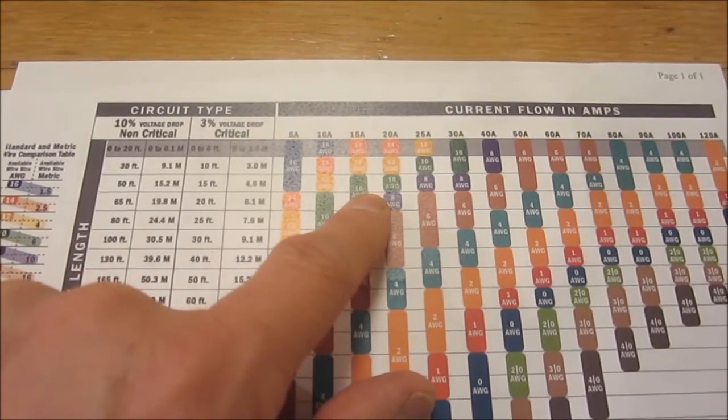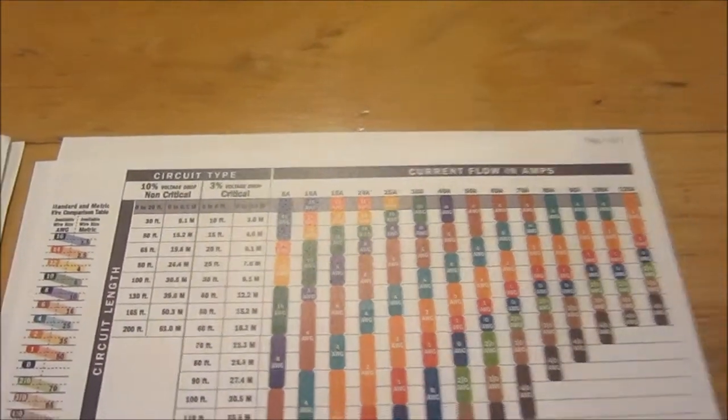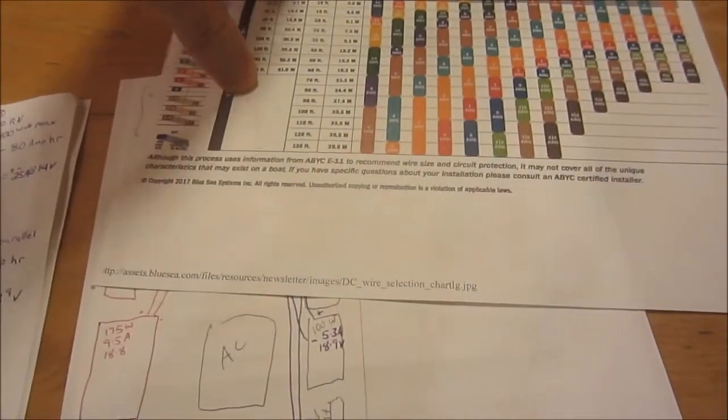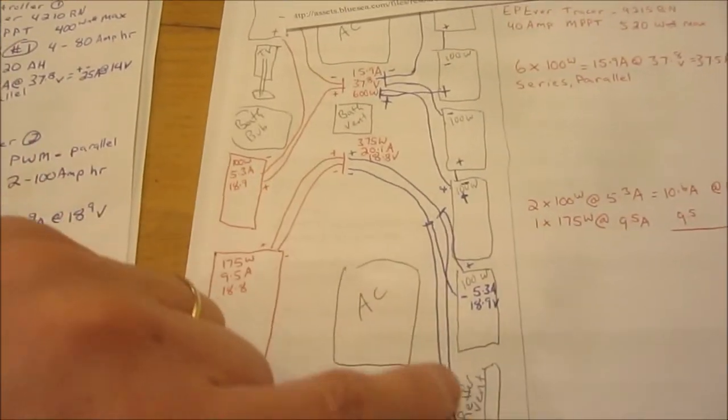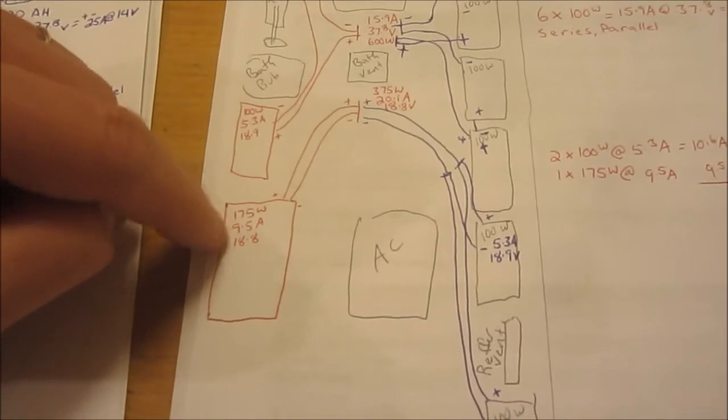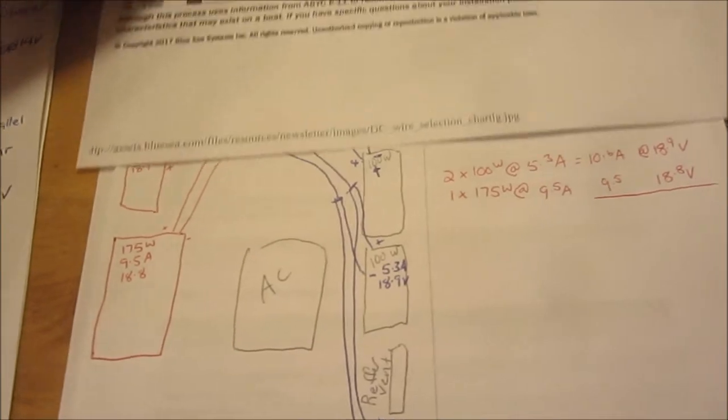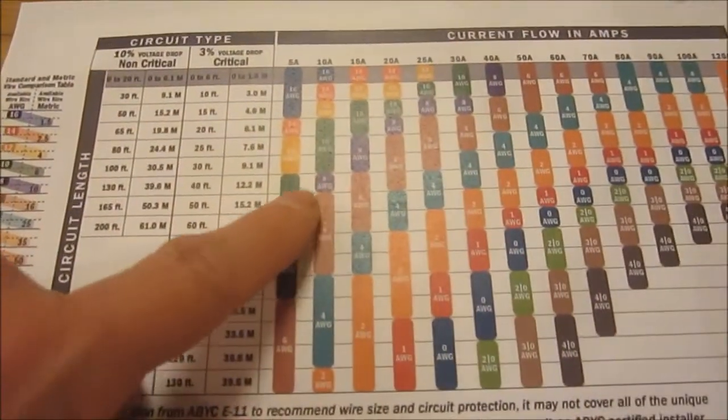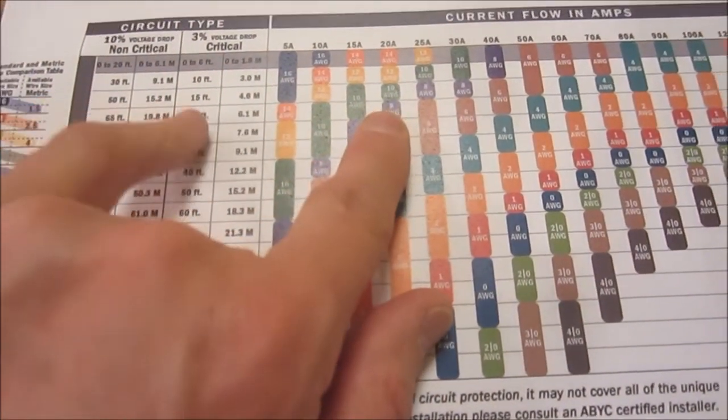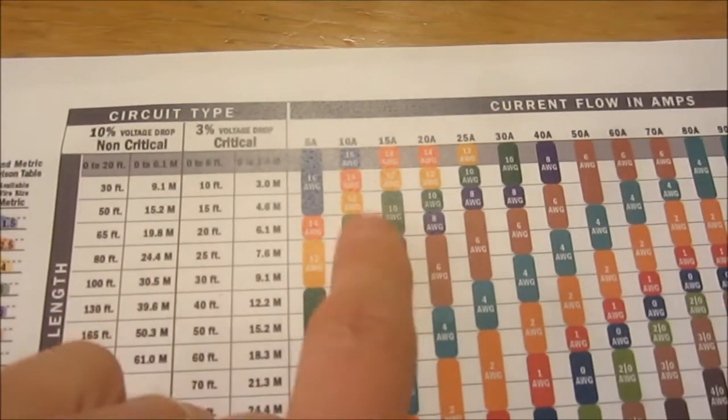But what about when I go up to the 20 amps, which I'm going to be doing now with these three panels and the addition of the 175 one? So that's 20.1 amps at 18.8 volts. 15 feet says I'm still good, but that's pretty vague chart for me, so I went and I found another chart.